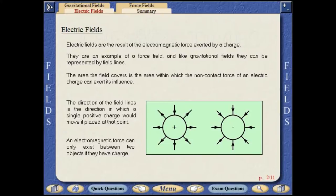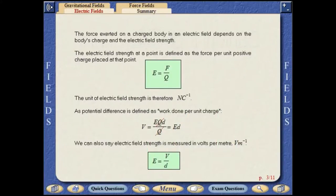An electromagnetic force can only exist between two objects if they have charge. The force exerted on a charged body in an electric field depends on the body's charge and the electric field strength.